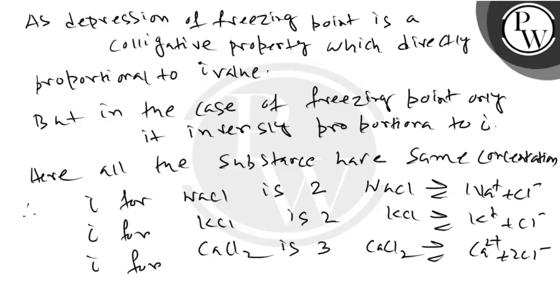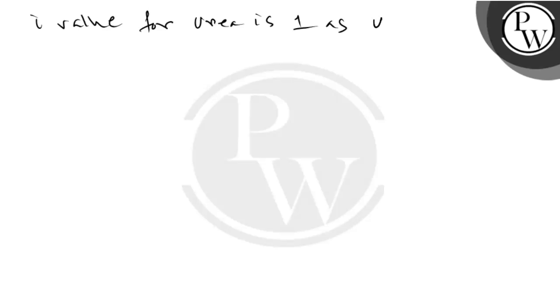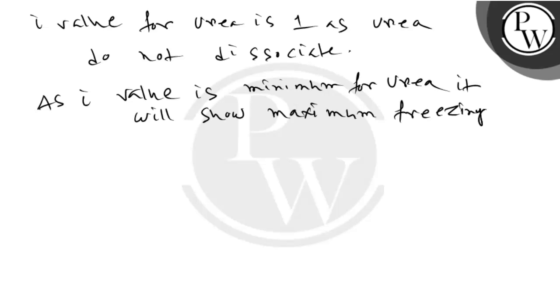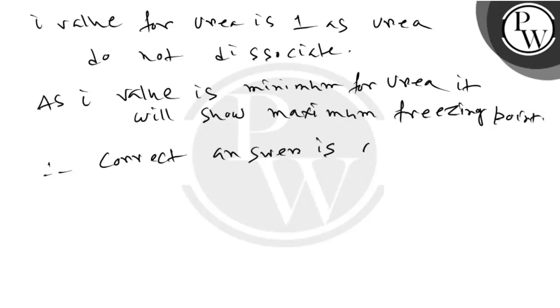The i value for urea is 1, as urea does not dissociate. Since the i value is minimum for urea, it will show the maximum freezing point. Therefore, the correct answer is option 4.